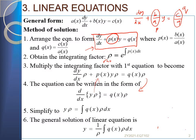Once we have d/dx(ρy) equals Q·ρ, we integrate both sides. The d/dx on the left cancels with the integration, leaving ρy equals the integral of Q·ρ dx. Then we move rho to the right-hand side to get the general solution for y.